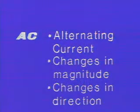AC is alternating current, which changes in both magnitude and direction. AC voltage is a voltage that produces an alternating current. It changes in amplitude and polarity. Amplitude is the magnitude or value of an AC voltage.